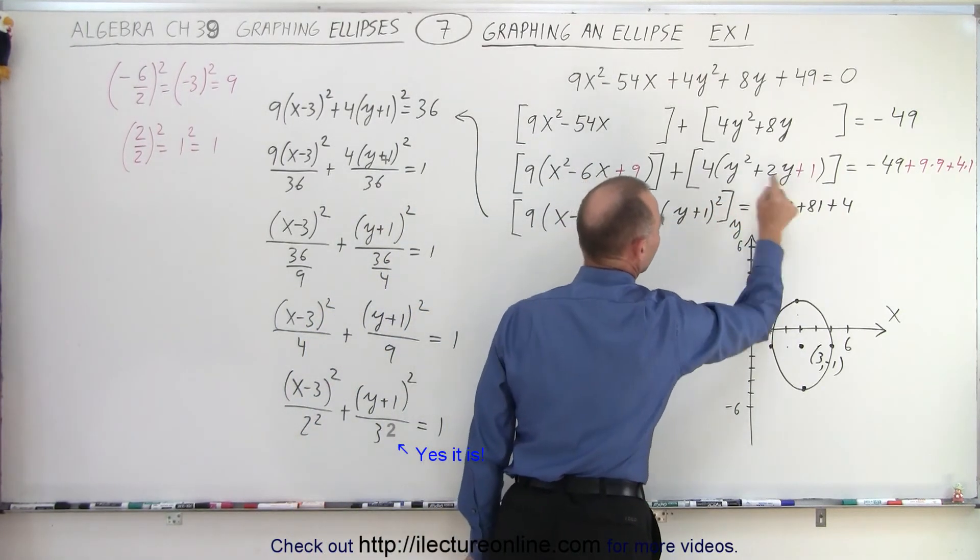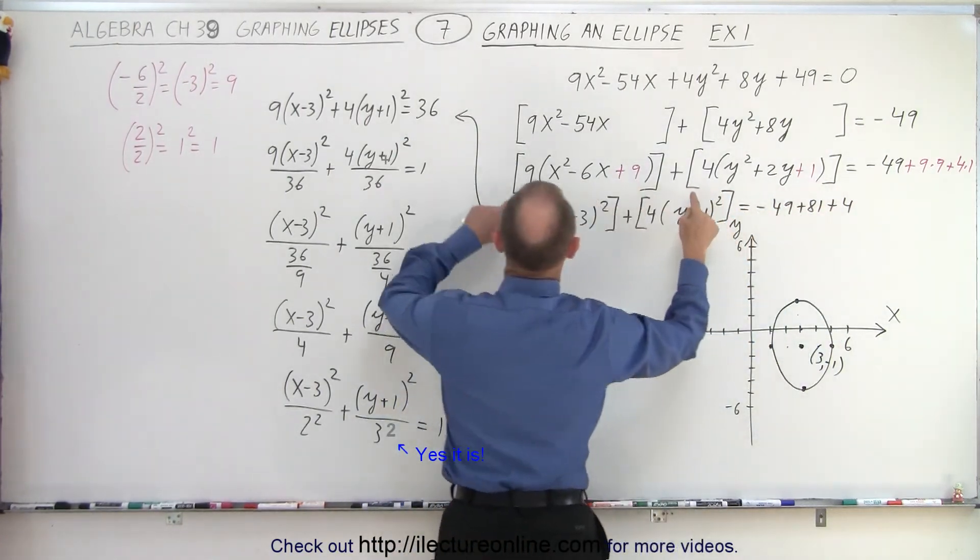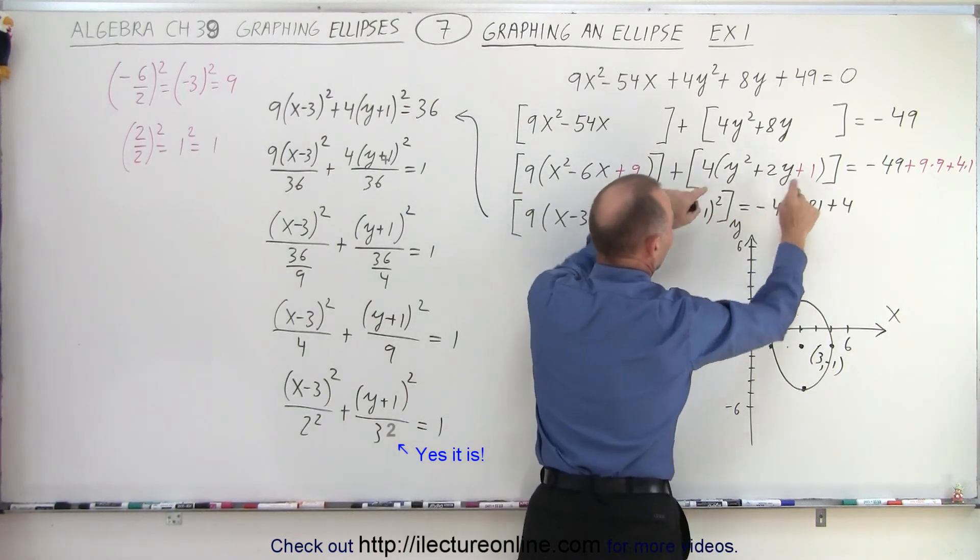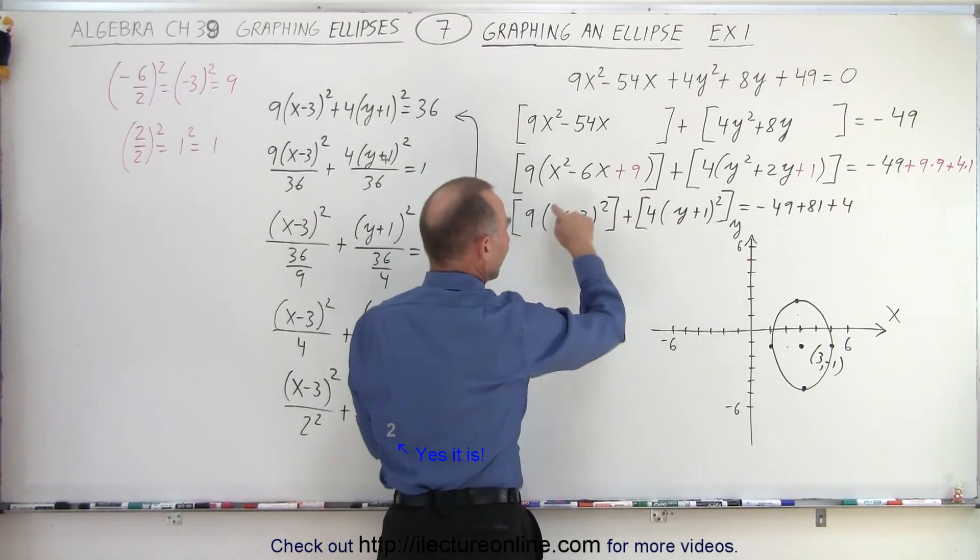Then you complete the square by taking half the middle term and squaring it. Half the middle term and squaring it. Of course, when you add on the left side, you have to add it to the right side. And don't forget that this is multiplied times 9 and this is multiplied times 4.